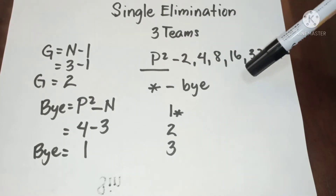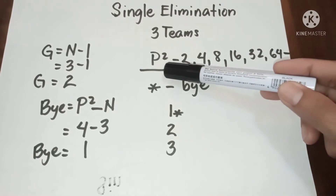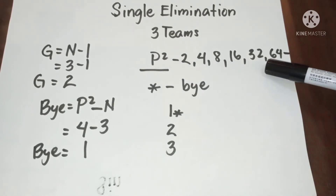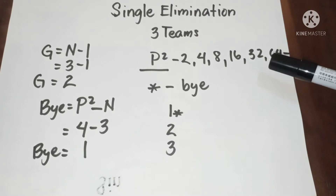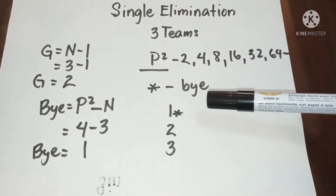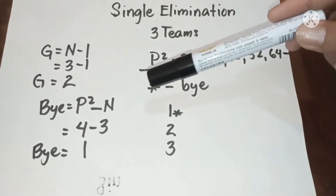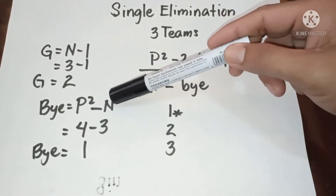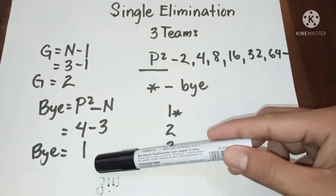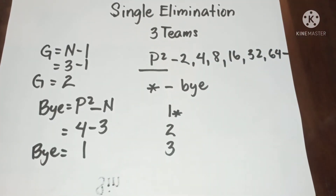To find the bye, look at the powers of two — any number not in the power-of-two sequence has byes. The formula to get the bye is: power of two minus n, meaning we have one bye.